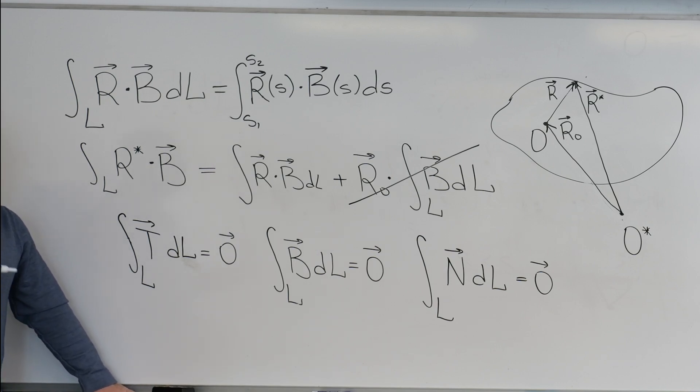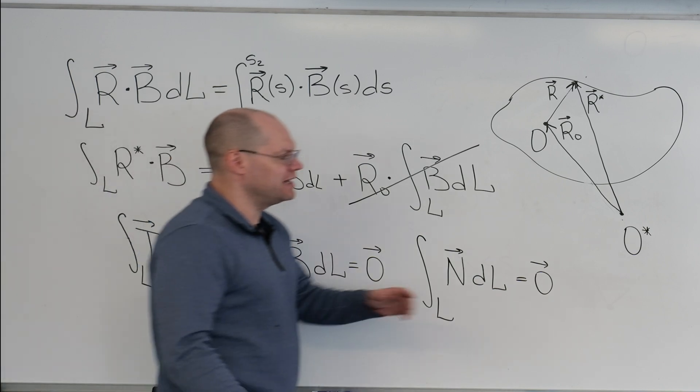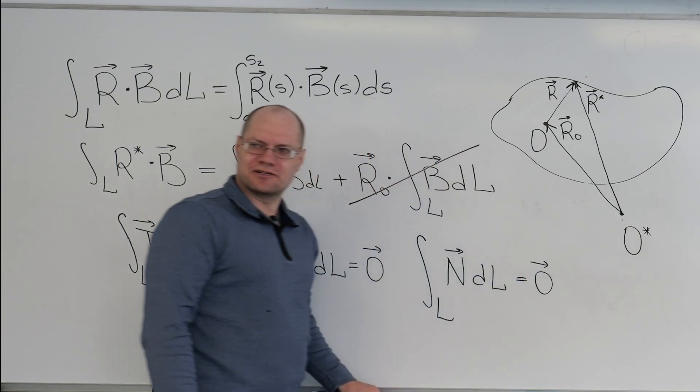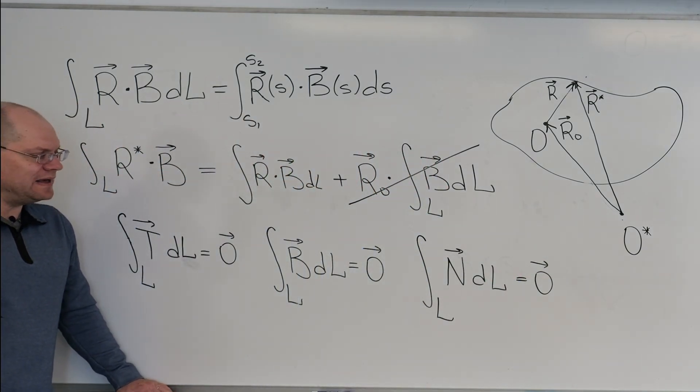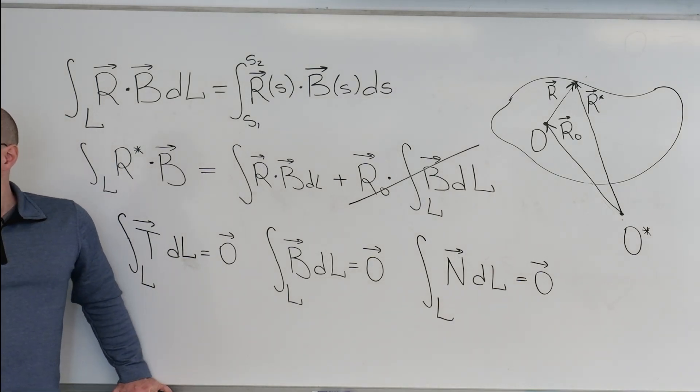So this integral does not depend on where you put the arbitrary origin. And therefore, it's just a characteristic of the curve, and not a characteristic of the curve plus where you chose your arbitrary origin. Does that make sense?